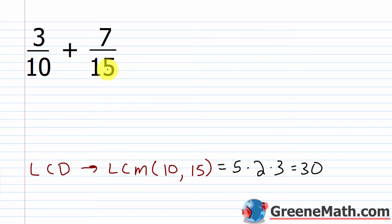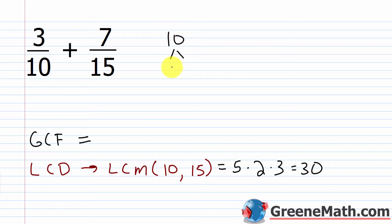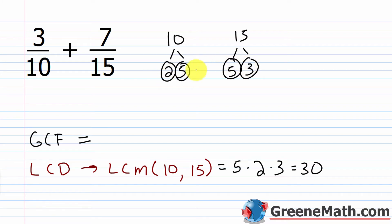Notice you have 10 and 15. The LCD or LCM is a larger number — 30 is the smallest positive number divisible by both 15 and 10: 30 divided by 15 is 2 with no remainder, and 30 divided by 10 is 3 with no remainder. For the greatest common factor or greatest common divisor, we're looking for the largest number that each of these numbers is divisible by. Factoring each: 10 is 5 times 2, and 15 is 5 times 3. The only thing common to both is 5, so the greatest common factor is 5.